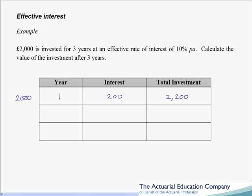Now this is where the difference is — we now earn interest on everything: the original investment and the interest. So in the second year we do 10% of £2200, getting interest of £220, giving a total investment of £2420 at the end of year two. In the third year we do 10% of £2420, getting £242 interest, which gives us a final answer of £2662.